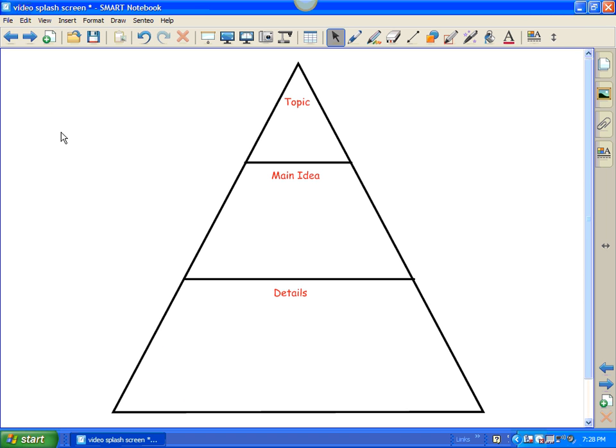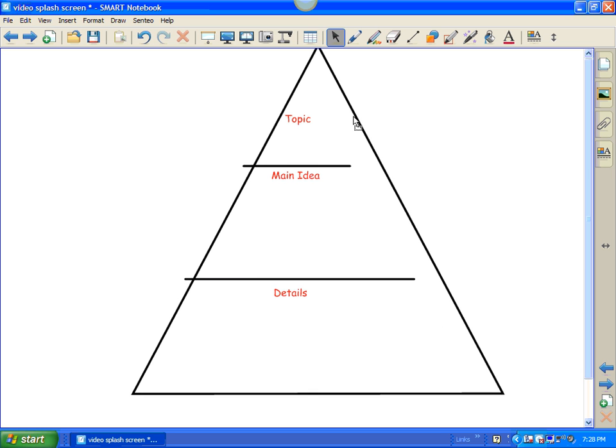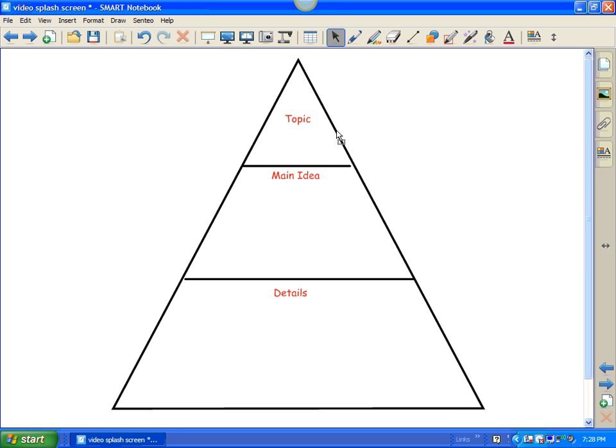Now, here's an example of grouping. I made this nice graphic organizer and I probably want to use it over and over again, but if you notice all of these different objects are separate pieces, like that's just a line and then I've got a triangle and if I try to move that, it's not going to move together in one piece. So this is where grouping comes in handy.